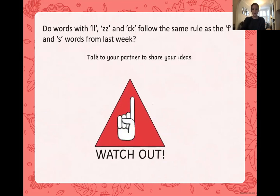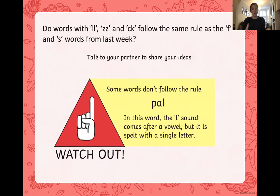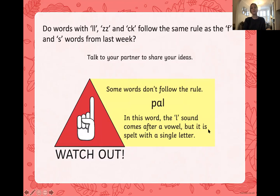Watch out though — some words don't follow the rule. Let's sound this one out together: P-A-L, pal. Pal is another name for our friend. In this word, the L sound comes after a vowel, but it is still only spelled with a single letter. So there are some exceptions, but most of the time if we're unsure we can use this rule and we'll probably get it right.